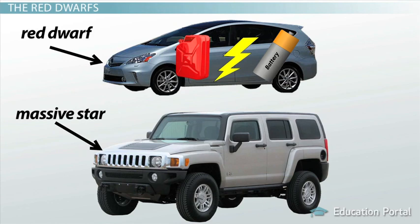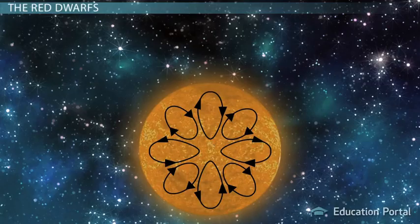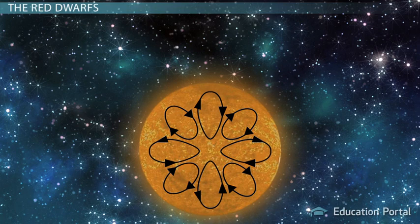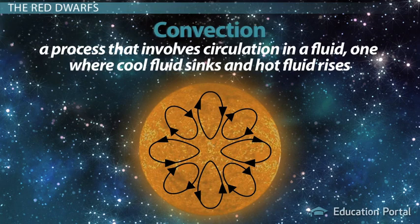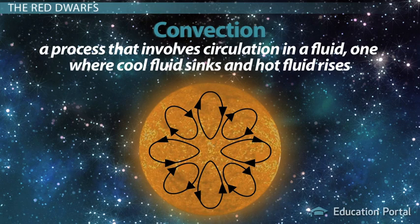Well, red dwarfs use the process of convection to live longer. Convection is a process that involves circulation in a fluid, one where cool fluid sinks and hot fluid rises.